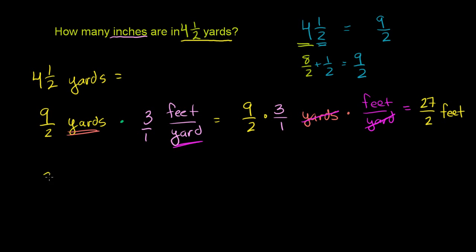So now we have 27 over 2 feet, and now we want to convert this to inches. And we just have to remember, there are 12 inches per foot. And we're going to want to multiply by 12. Because however many feet we have, we're going to have 12 times as many inches. If we have 1 foot, we're going to have 12 inches. 2 feet, 24 inches. 27 over 2 feet, we're going to multiply it by 12 to get the number of inches. So this is going to be times 12, and we'll make sure the dimensions work out, 12 inches per foot.